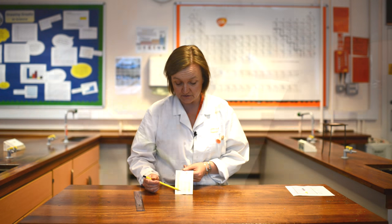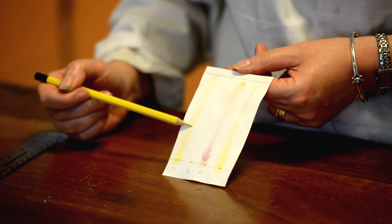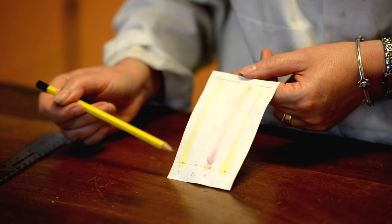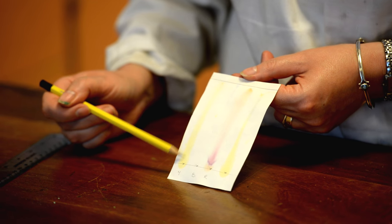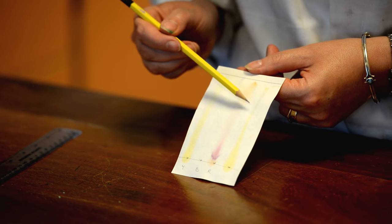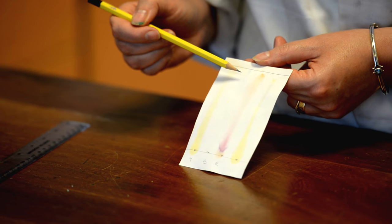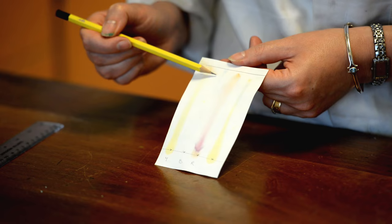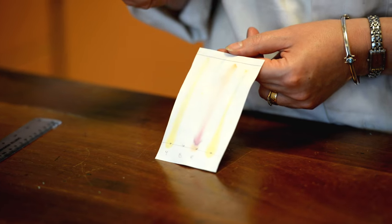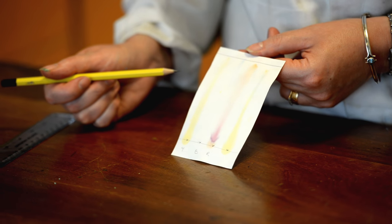Now straight away you can see that our unknown is very clearly showing that it contains the yellow, because just by visual inspection you can see that you've got that similar pattern of the yellow color. You'll also see that it's got this darker part at the top here which coincides with the blue food coloring, because you can see that's made its way all the way up to the top of the paper. So this unknown food coloring was a mixture of the yellow and the blue, and we've separated those out.